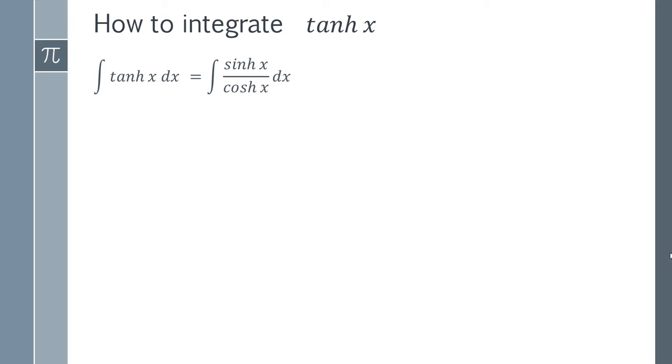And this gives us an absolutely perfect u substitution. So we're going to let u be our cosh function. And this is going to give an interesting result. So we find the derivative of that, and we get sinh.